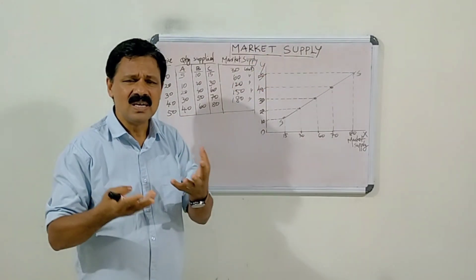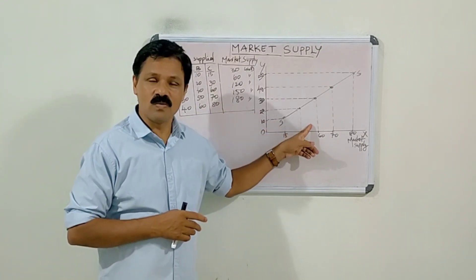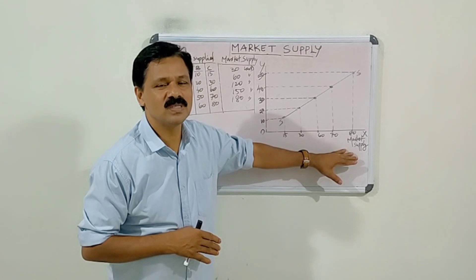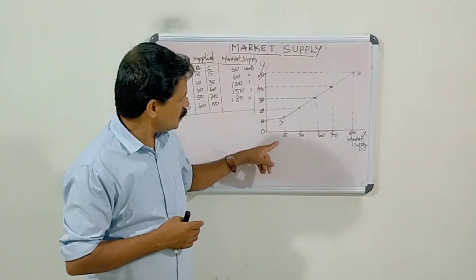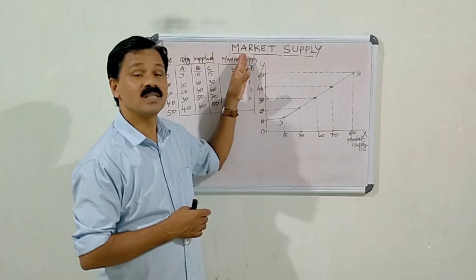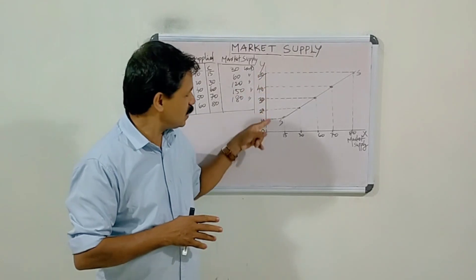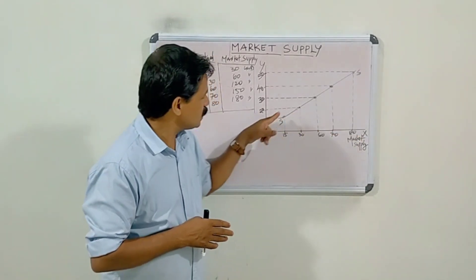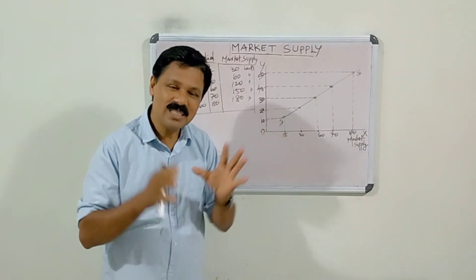We can easily convert the typical market schedule into the form of a market supply curve. In this diagram, along the X-axis represents the quantity which is offered for sale by the suppliers. As the price increases from 10 to 20, 20 to 30, 40 and 50, the quantity supplied will also increase. Therefore, the supply curve slopes upward, or is positively sloped, shifting to the right.